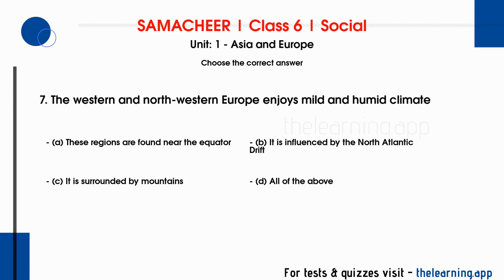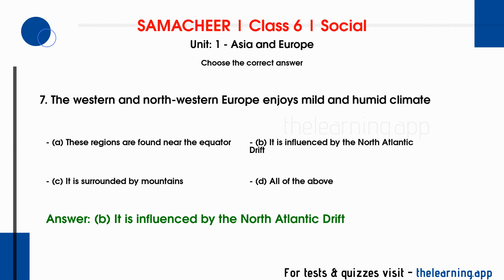Question 7: The western and northwestern Europe enjoys mild and humid climate. Options are: A. These regions are found near the equator, B. It is influenced by the North Atlantic Drift, C. It is surrounded by mountains, D. All of the above. Correct answer is B, it is influenced by the North Atlantic Drift.